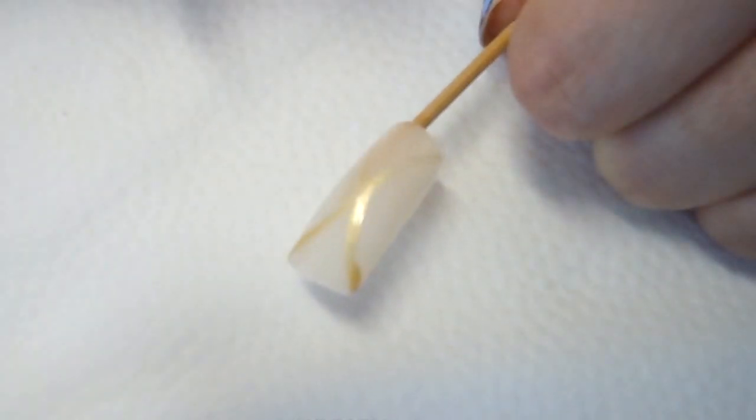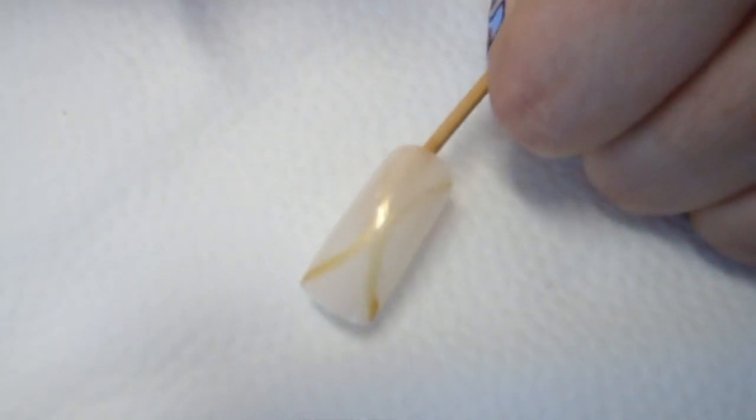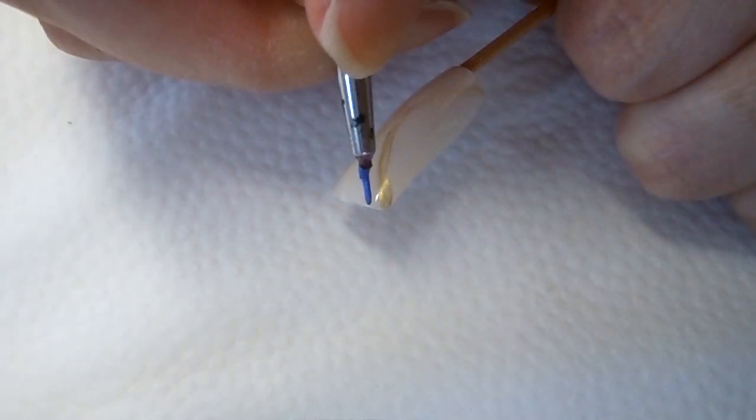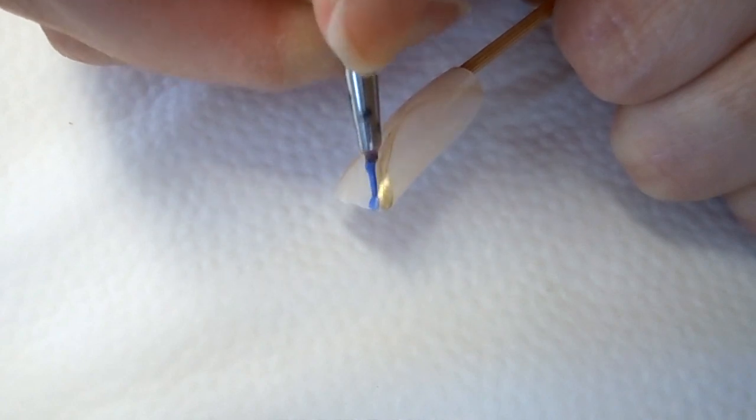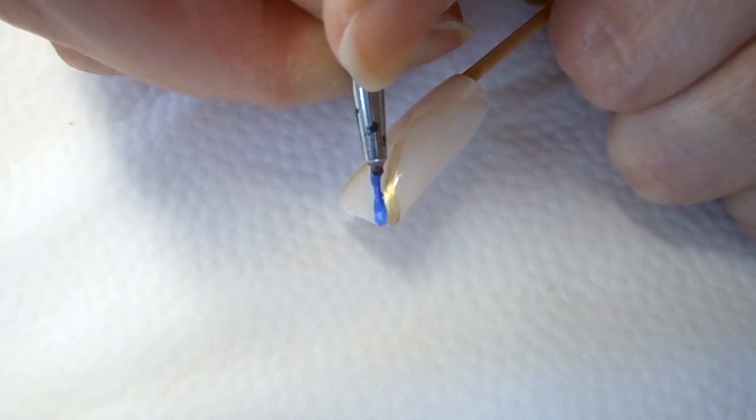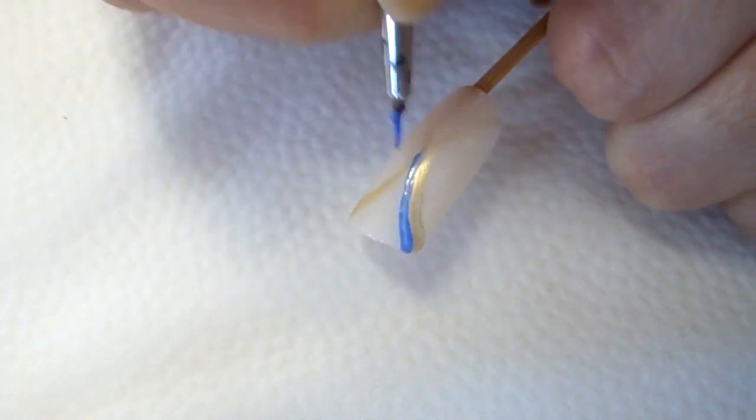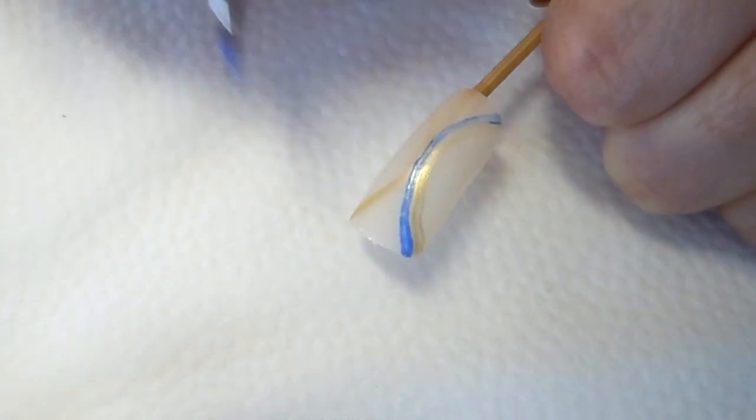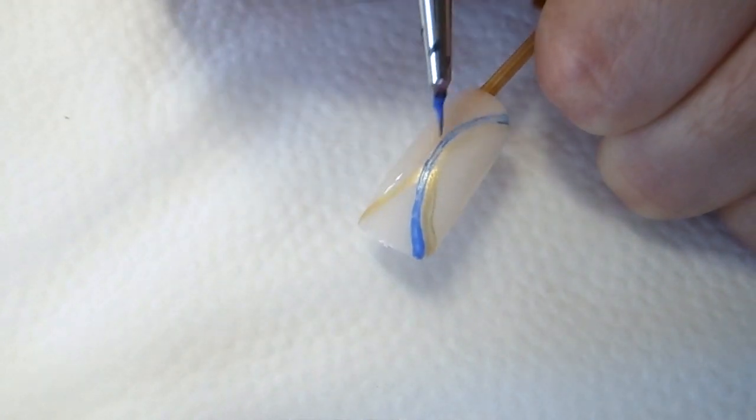Of course it will take probably two or three coats of acrylic paint to get this completely opaque. For this color we're going to start right over here besides the gold and just make the same kind of arc line. We're going to do exactly the same thing on the opposite side.